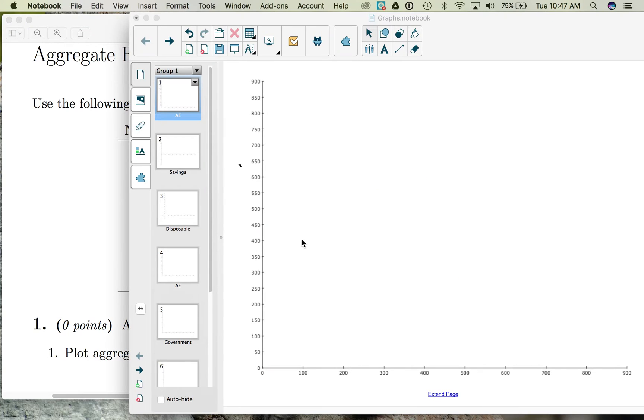Well, let's plot this information. So here on the horizontal axis, we have national income, and on the vertical, we have our aggregate expenditures. Notice that when income is zero, aggregate expenditures is 300. So our line is going to start on the vertical axis where aggregate expenditures are 300.